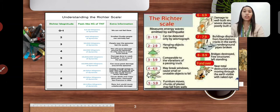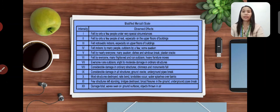This is now the modified Mercalli scale. Intensity 1, observed effect is felt by only few people under very special circumstances. Intensity 2, felt by only few people at rest, especially on the upper floors of buildings. Intensity 3, felt noticeably indoors, especially on upper floors of buildings.